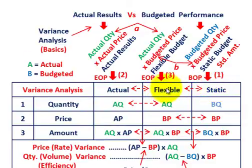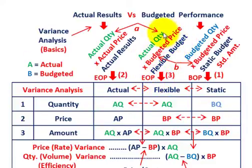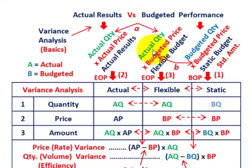Now you can determine the flexible budget amount. With the flexible budget, you take your actual quantities from your actual results and multiply by the budgeted price. So actual quantity times budgeted price gives you your flexible budget.